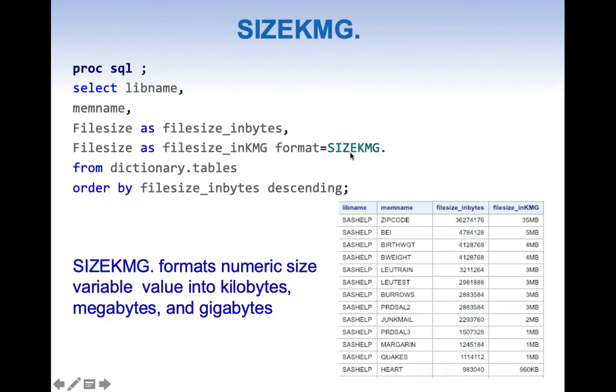SIZEKMG format smartly fixes everything into groups. If it finds something which is 1 MB or more than 1 MB, it puts it in MB. If something is in gigabytes, it puts it into gigabytes. If less than gigabytes it puts into megabytes. If it is less than megabytes it keeps it in kilobytes.